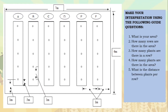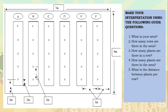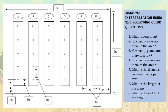What is the distance between plants per row? We have 1 meter. What is the length of the area? We have 7 meters. And what is the width of the area? We have 6 meters.